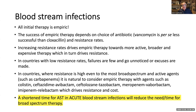Even in settings where resistance is not very high, a shortened time for AST in acute bloodstream infections will reduce the need — and the time — for broad-spectrum therapy, because we also like to play it safe. We don't want to sacrifice patients because of a poor empiric choice. If a susceptibility report showed that this E. coli belongs to the 50% that is actually susceptible to ordinary ampicillin, that would probably change our behavior.